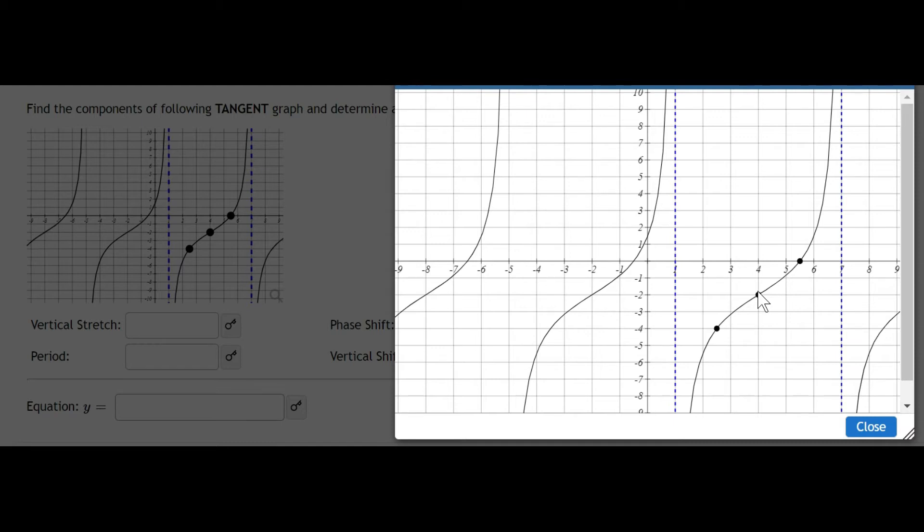Typically with a tangent or cotangent graph, you'll be given what's called an upper dot and a lower dot. Really all those demonstrate our vertical stretch. So this dot is the inflection point. The phase shift of the tangent graph comes from this x value and the vertical shift comes from the y value.